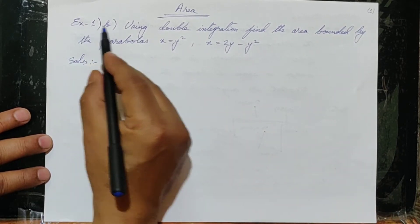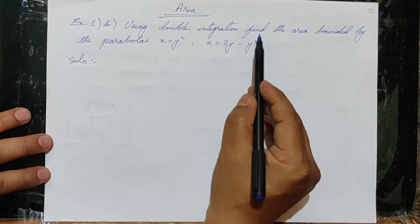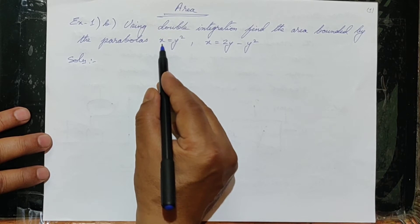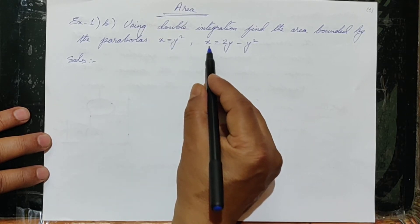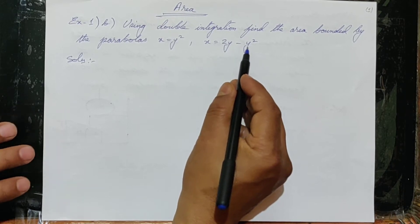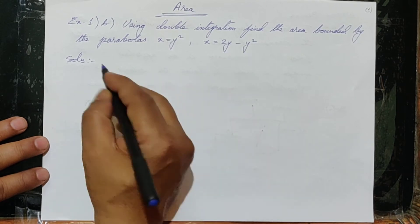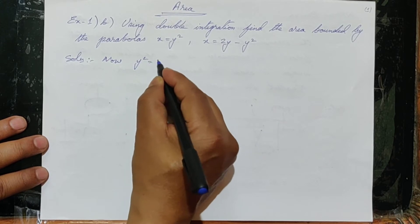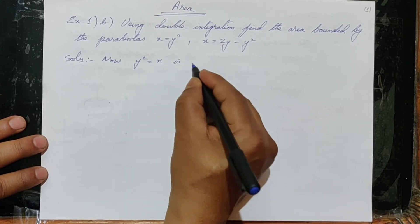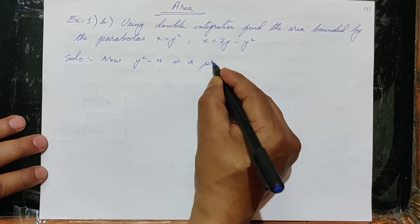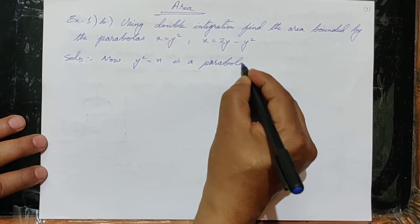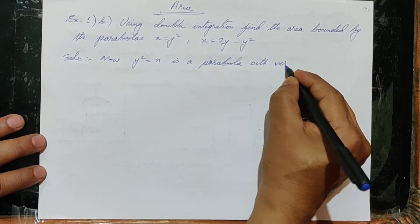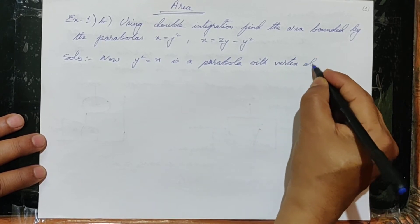Here we have an example where, using double integration, find the area bounded by the parabolas — that is, x is equal to y square and x is equal to 2y minus y square. Now we have to find the solution. We can write the first equation as y square is equal to x, which is a parabola with vertex at origin.